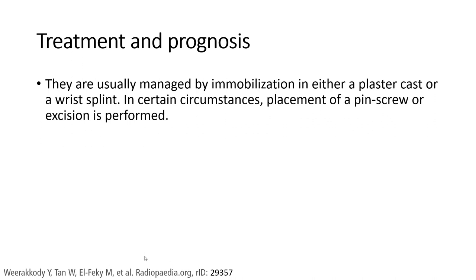What is the treatment and prognosis of pisiform fracture? They are usually managed by immobilization in either a plaster cast or a wrist splint. In certain circumstances, placement of a thin screw or wrist splint is performed.